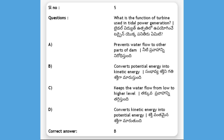What is the function of a turbine used in tidal power generation? Options: prevents water flow to other parts of dam, converts potential energy into kinetic energy, keeps the water flow from low to higher level, converts kinetic energy into potential energy. The answer is B, converts potential energy into kinetic energy.